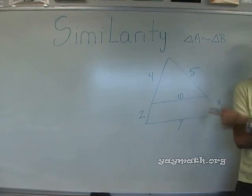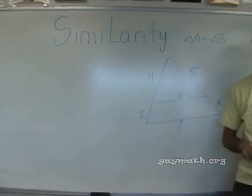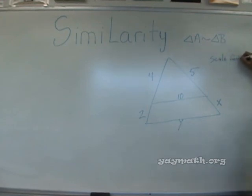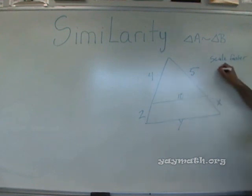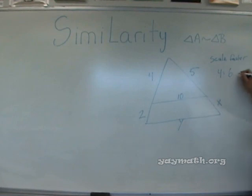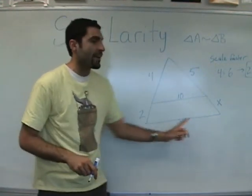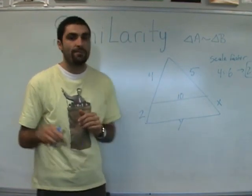Can you give me the scale factor of the two triangles — small to big? Four to six — that's not simplified, so it would really be two over three, or two to three. Let's simplify this by drawing the two triangles separately so we can compare them clearly.